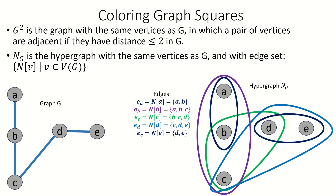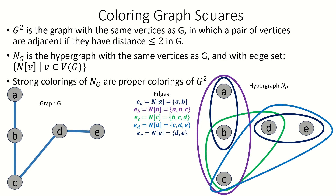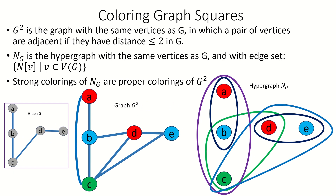This hypergraph has the same vertex set as G, and the edge set is the set of all closed neighborhoods of vertices in G. It turns out that a strong coloring of this neighborhood hypergraph is a proper coloring of the square of G, and vice versa.